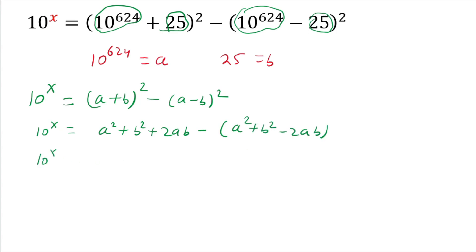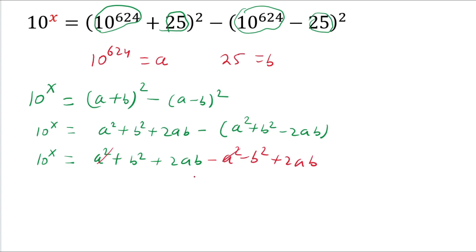So 10 power x equals a² + b² + 2ab. The negative sign is multiplied inside the bracket, giving minus a² minus b² plus 2ab. The a² terms cancel out since one is positive and one is negative, and the b² terms cancel out as well. So 10 power x equals 2ab + 2ab, which is 4ab.